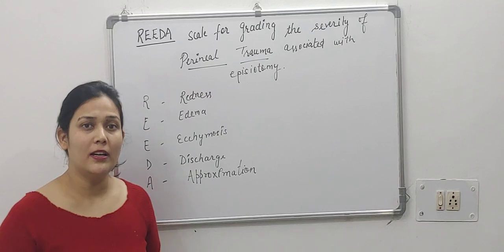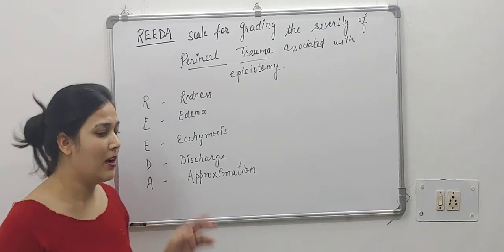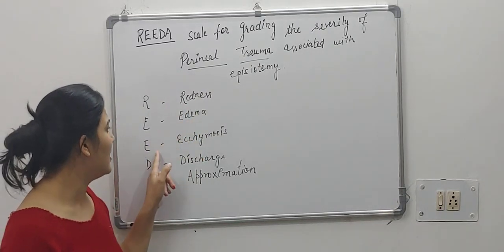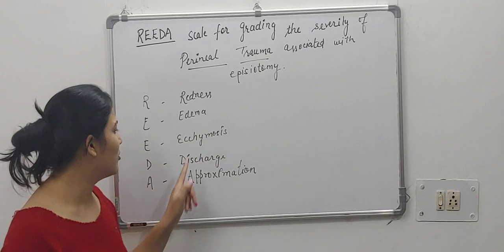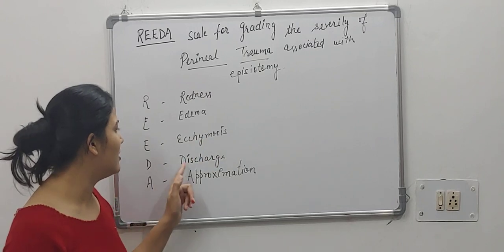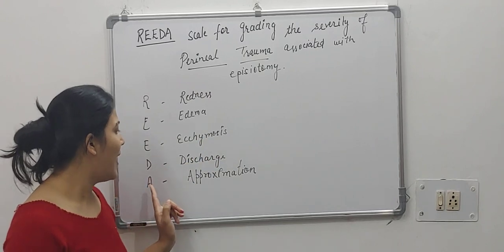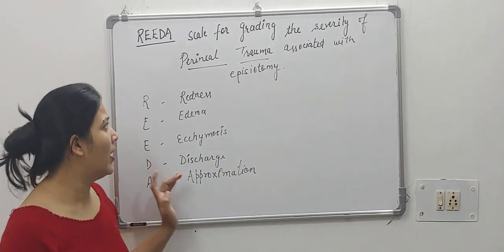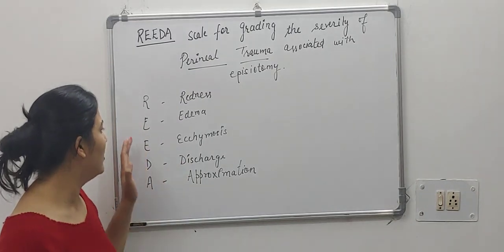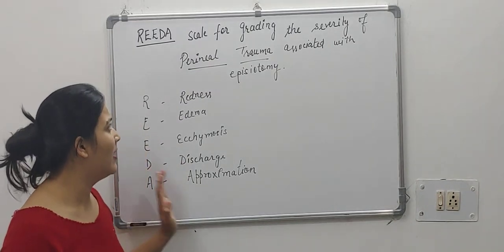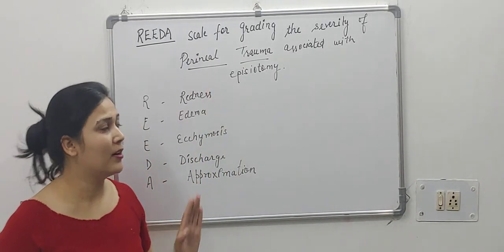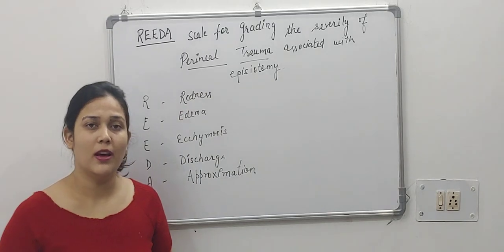REEDA stands for: R is Redness, E is Edema, E is Ecchymosis, D is Discharge, and A is Approximation. We have to assess all these five things whenever a person is having perineal trauma due to episiotomy.